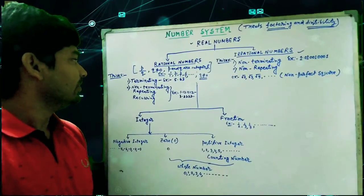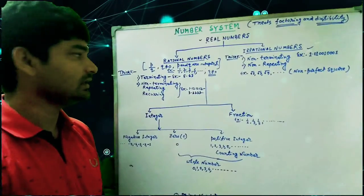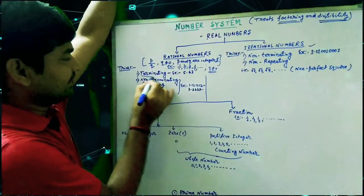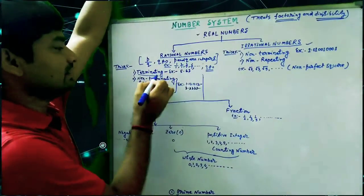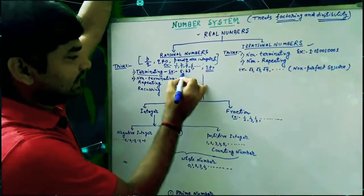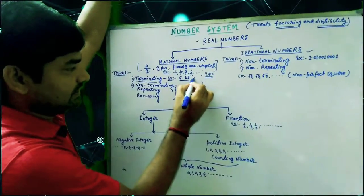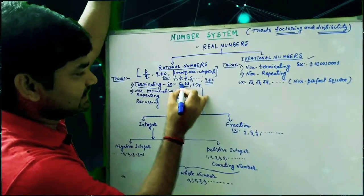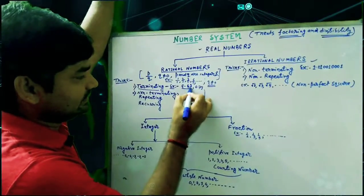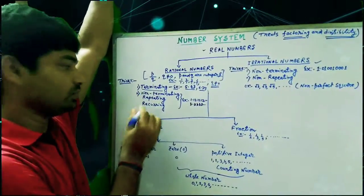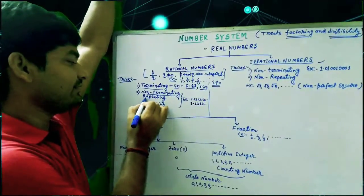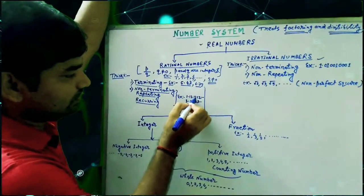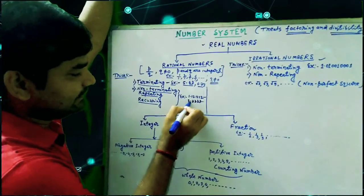Next, we have identification tricks for how to choose rational numbers. Trick number one: terminating. Rational numbers are terminating. For example, 5.63 and 6.73 — these numbers are terminating, meaning after the decimal point there are a finite number of digits. Trick number two: non-terminating or repeating or recurring. For example, 1.121212... and 3.3333...